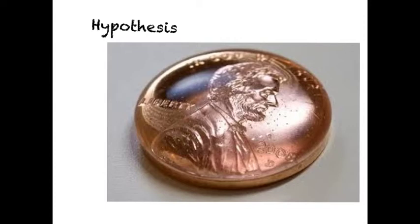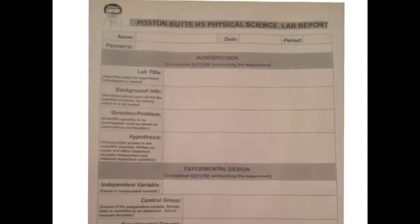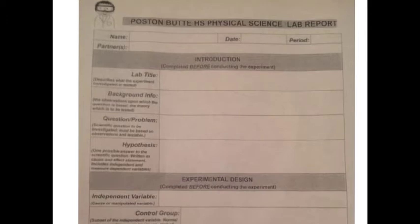You'll need to list the materials as well. This is the physical science post and mute lab reporting form. We've seen one similar to this before, but it was from chemistry, but this is the one we're going to use from now on.